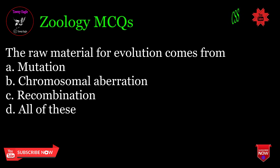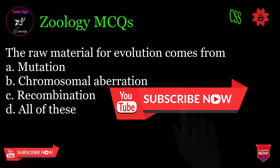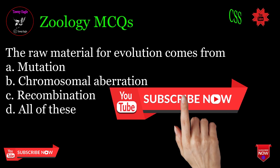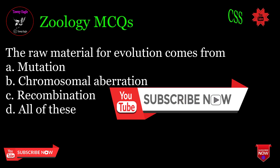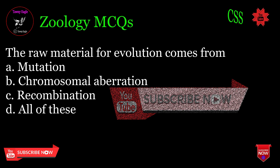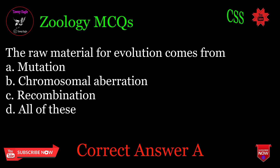The raw material for evolution comes from: A. Mutation, B. Chromosomal aberration, C. Recombination, D. All of these. Correct answer: A.